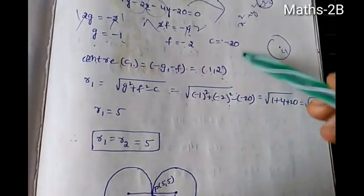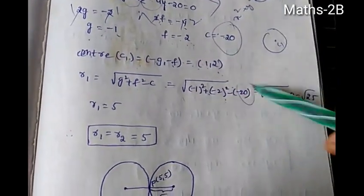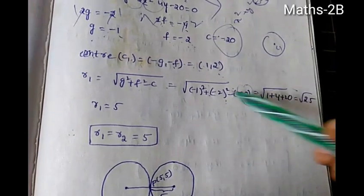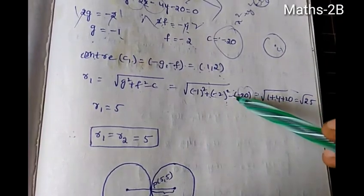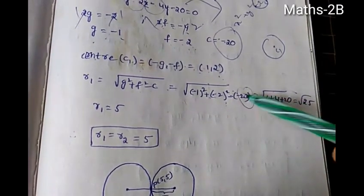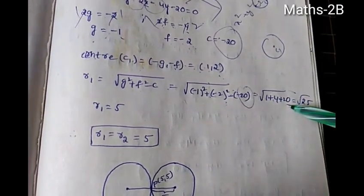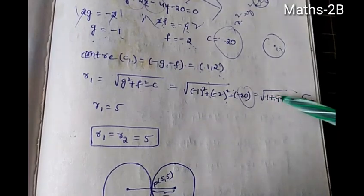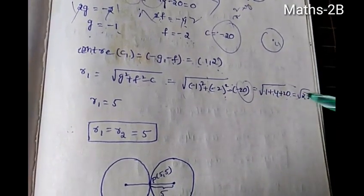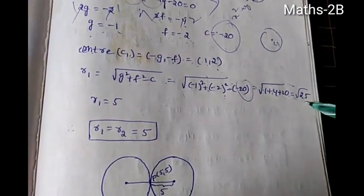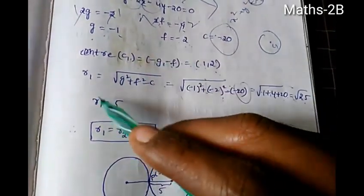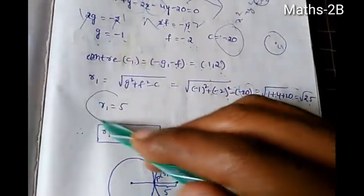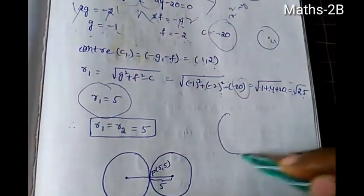The radius r1 equals √(g² + f² - c) = √((-1)² + (-2)² - (-20)) = √(1 + 4 + 20) = √25 = 5. So r1 = 5.